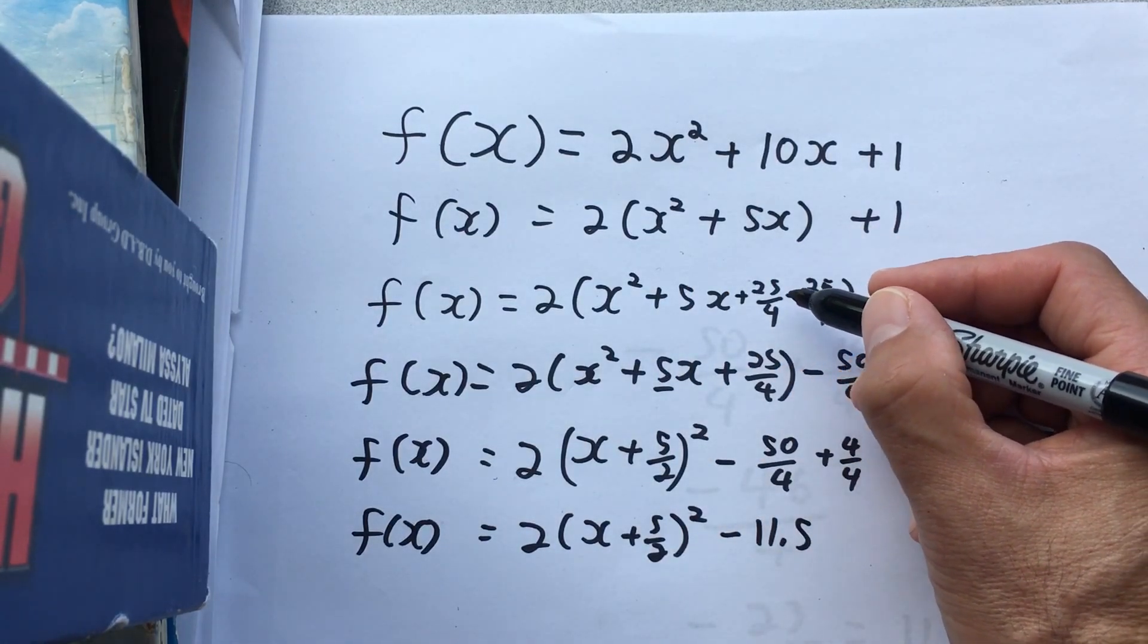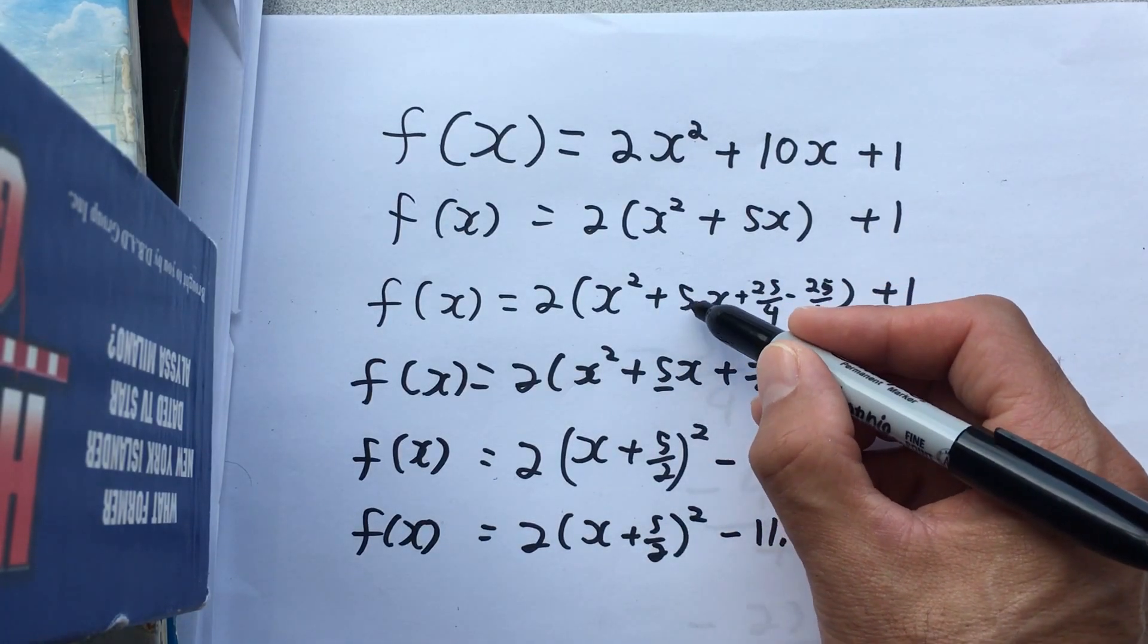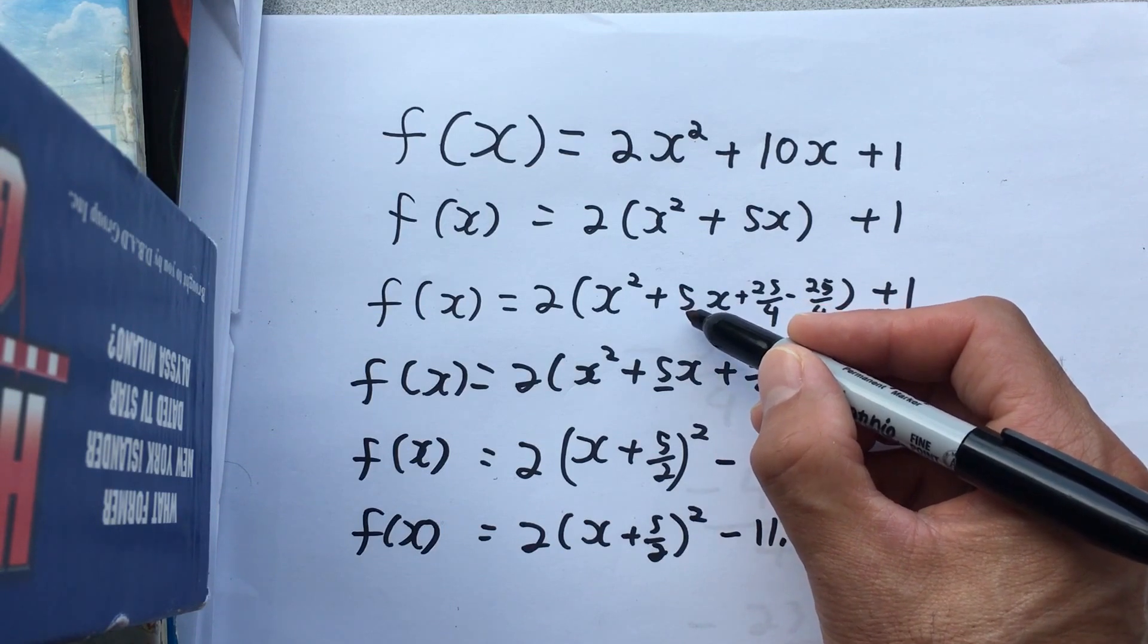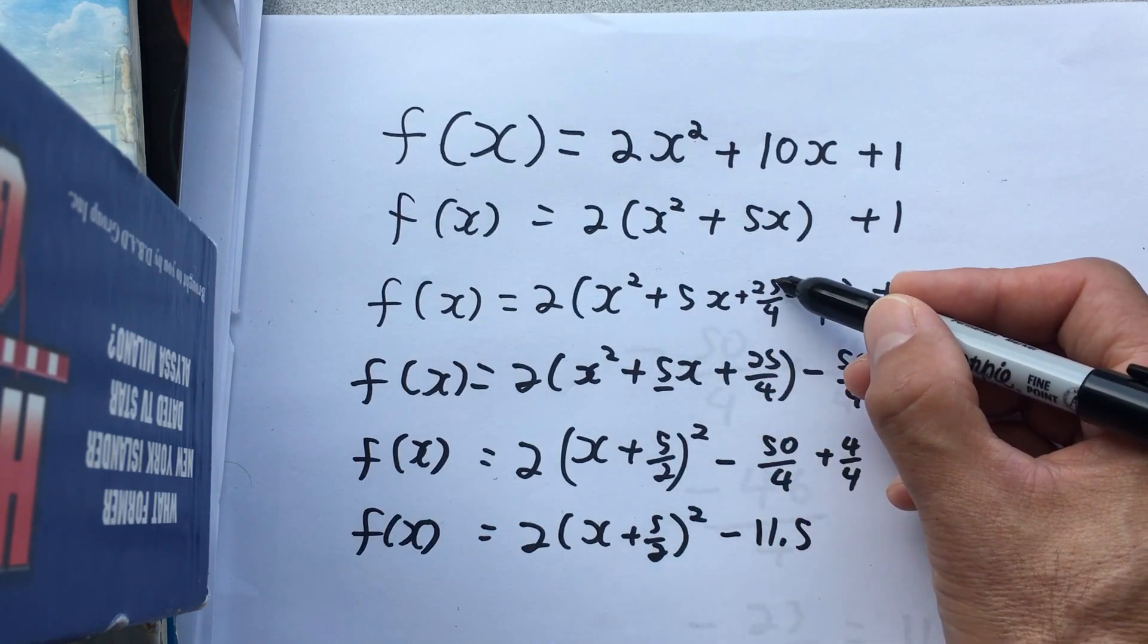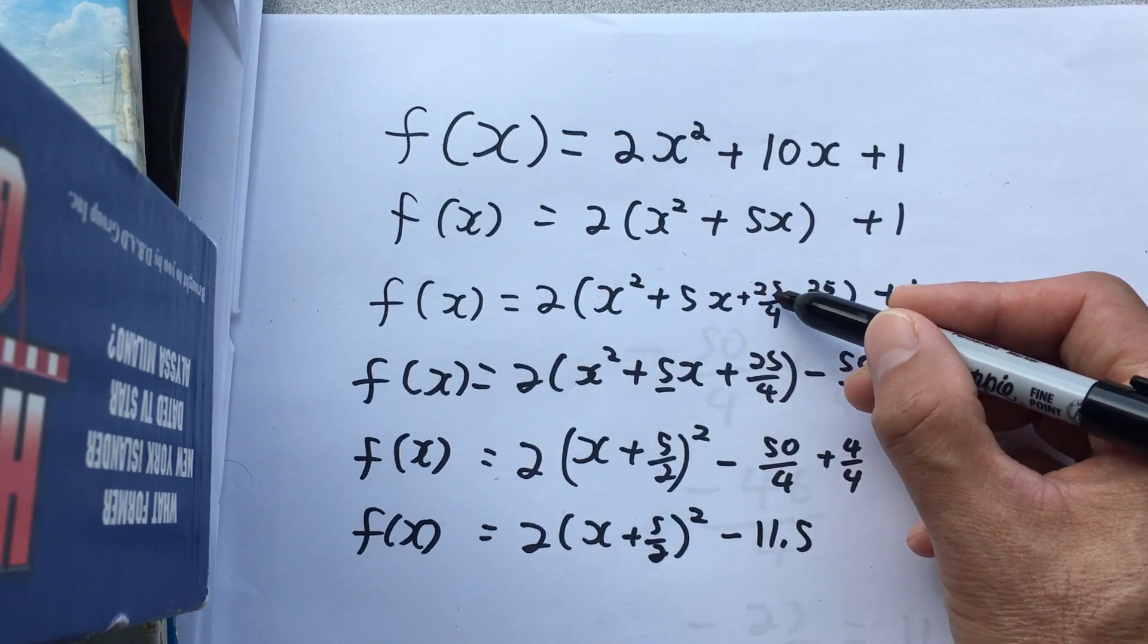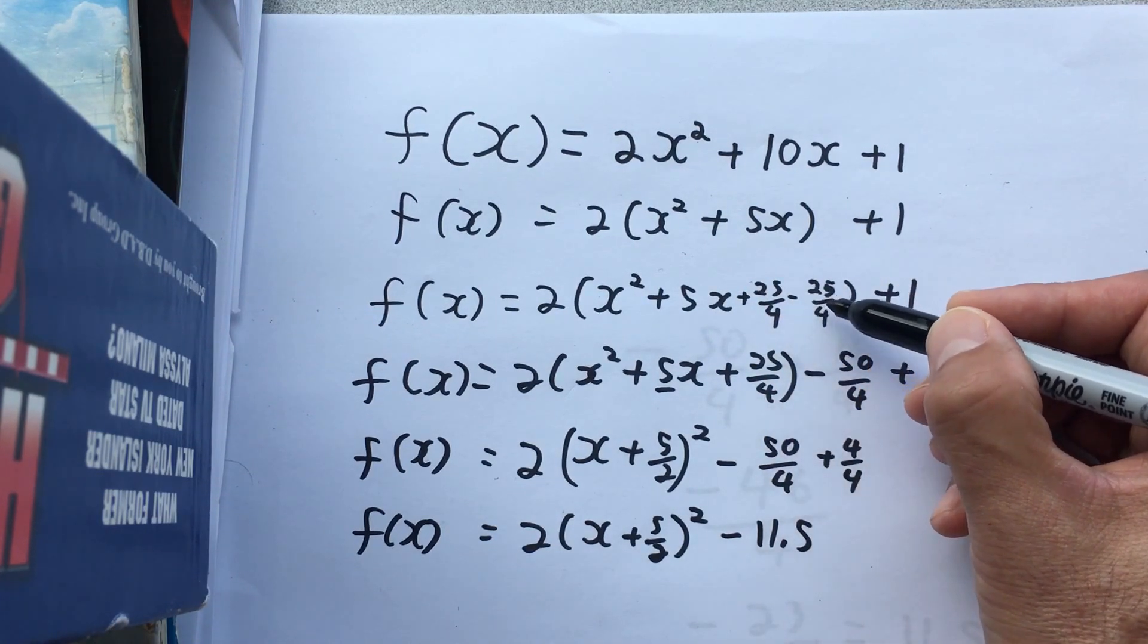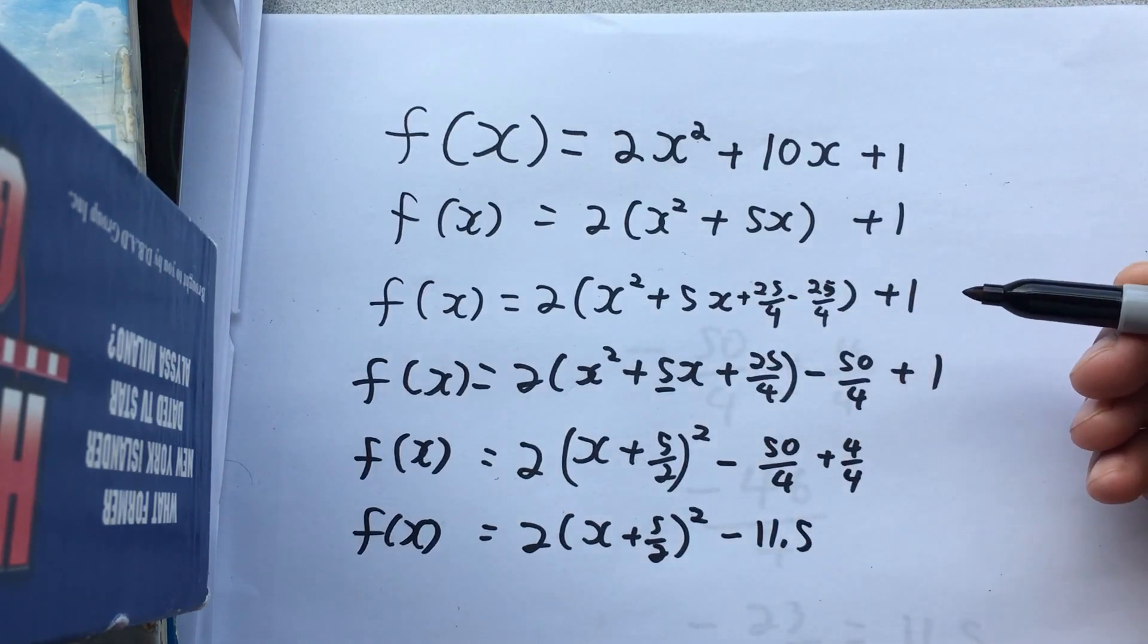And remember, the criteria is simple. Just take this number, divide it by 2, and then square the result. Half of 5 is 5 over 2, and when you square that, you get 25 over 4. Whatever you add, you must immediately after subtract to keep the equation balanced.